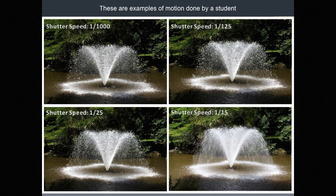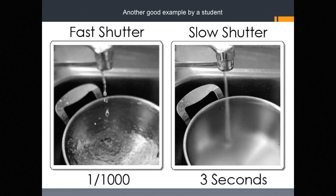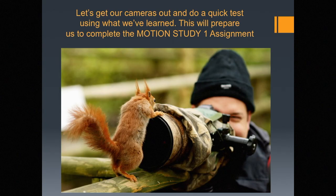Here are some examples of motion done by a student. We see a thousandth of a second in the upper left, and as we slow the shutter down to the lower right, we see a fifteenth of a second with a lot of motion. Here's another good example — just water dripping from a faucet. At a thousandth of a second, we freeze those water droplets, but at a three-second exposure, it just looks like a ghostly image of water with no definition. So let's get our cameras out and do a quick test using what we've learned, to prepare for the Motion Study 1 assignment.